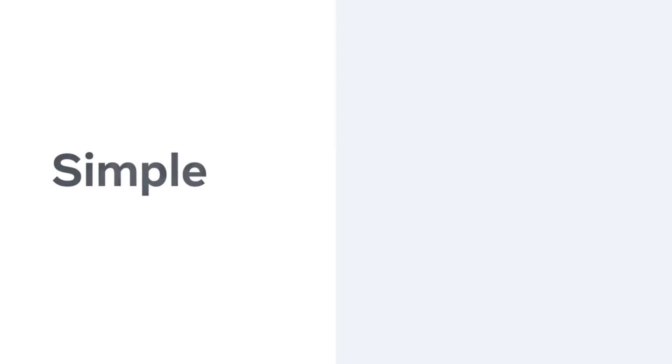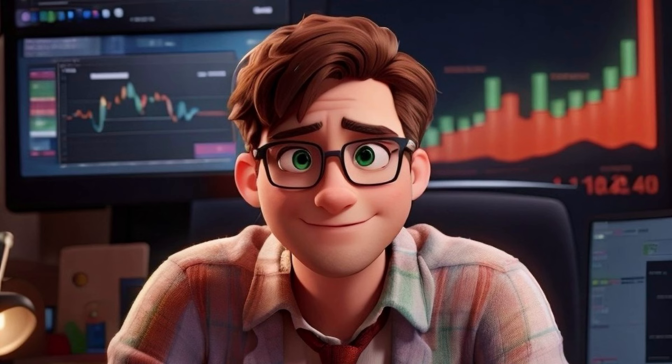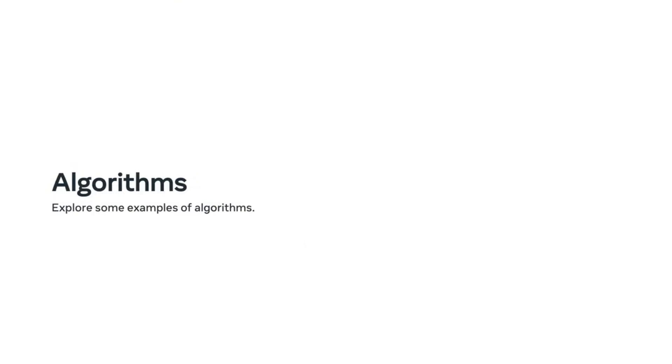An algorithm in programming works in a similar way. Algorithms are used to solve a multitude of problems ranging from simple to very complex. The key to understanding and creating an algorithm is to break the problem into smaller parts, just like the egg omelette recipe. That way, you build up the steps to complete the algorithm that will resolve the overall problem. Now let's explore a practical application of algorithms in coding.